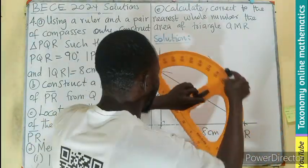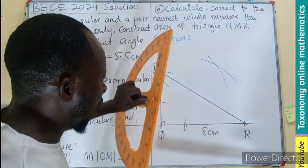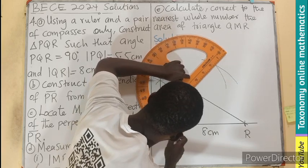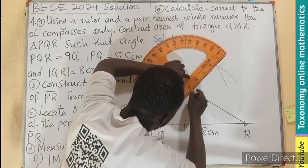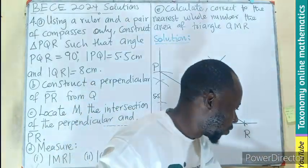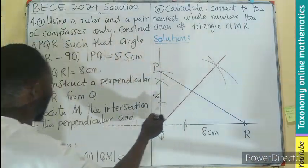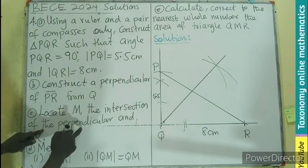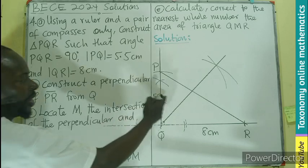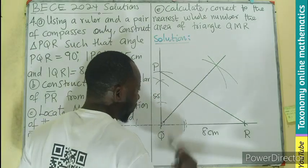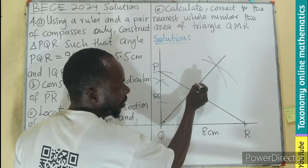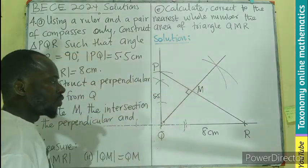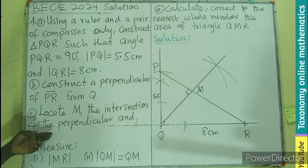We are now going to join the Q with the point of intersection of our bisector. So in this case, this is a bisector. We are going to look at M, the intersection of the perpendicular and PR. So this very point, we are going to label that as M. Since this is perpendicular, this will be 90, that will also be 90 as well.